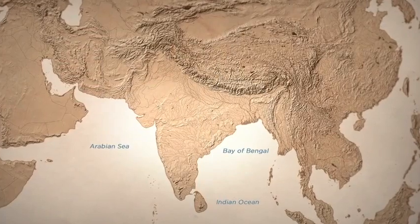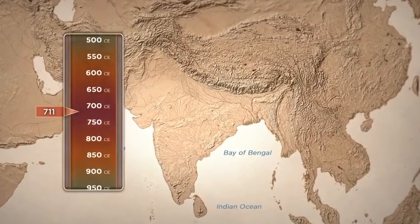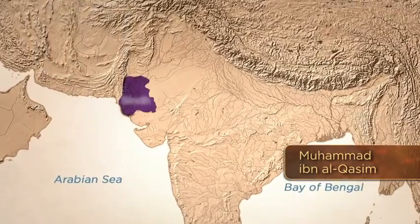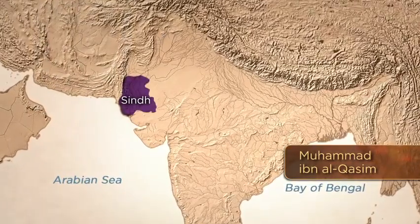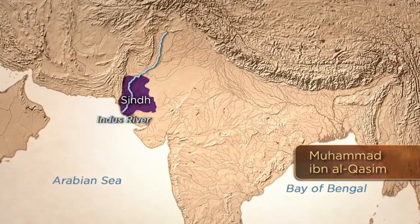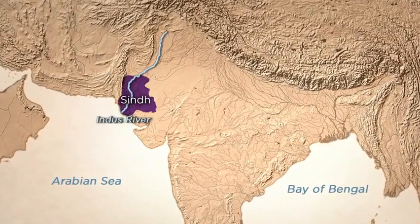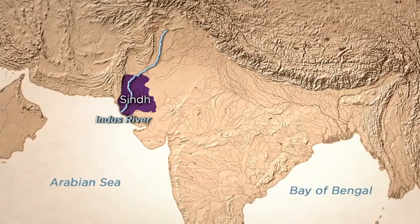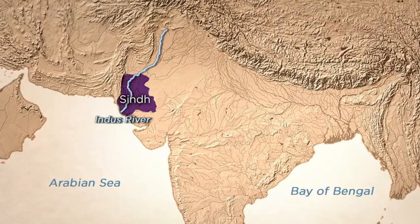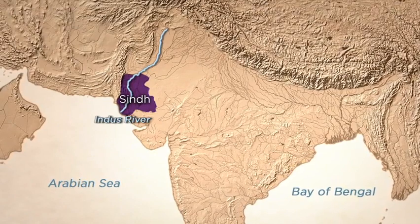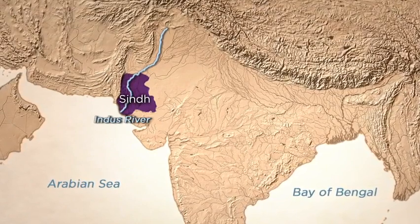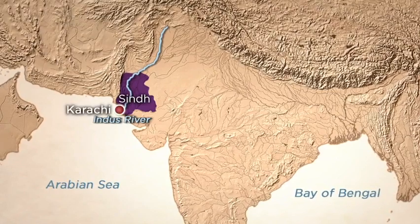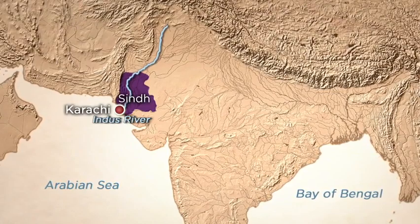After a series of military campaigns, by 711 an Arab general, Muhammad ibn al-Qasim, finally captured Sindh, the region around the mouths of the Indus River. This was less than a century after the emergence of Islam. Sindh has remained under Muslim rulers virtually ever since. Sindh now forms the second most populous province in Pakistan, and its main port of Karachi is Pakistan's largest city and its economic powerhouse.